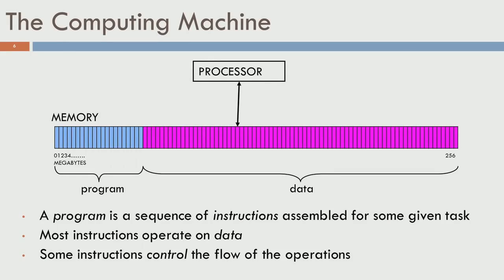The processor is the heart or brain of the computing system. Typically memory is divided into two portions: some portion dedicated for programs and some for data. A program is essentially a sequence of instructions assembled to do some task. It could be a game, software for this course, a search engine, a browser, anything.